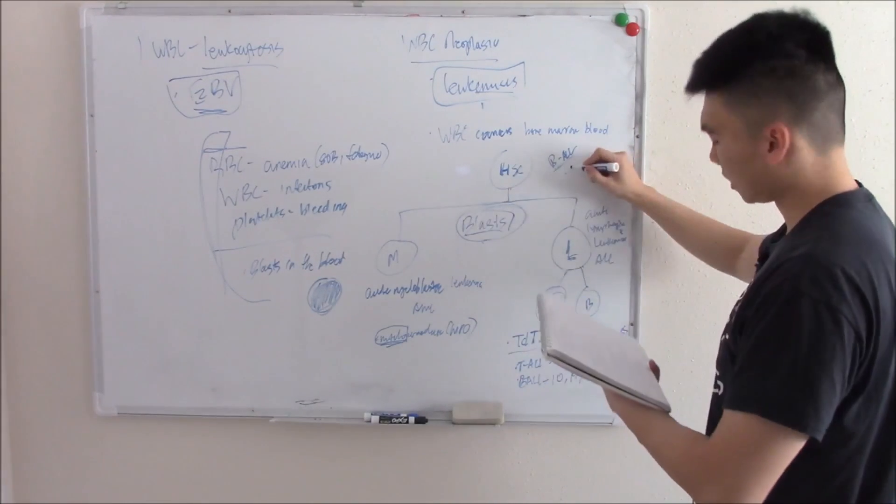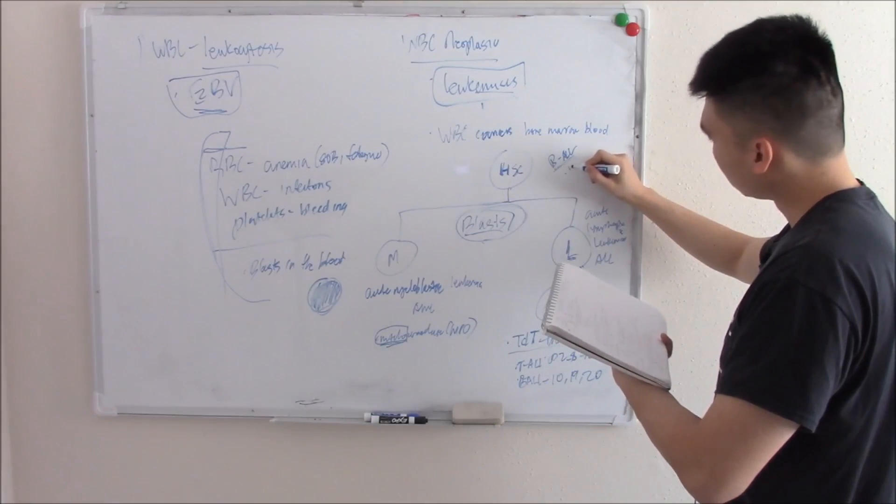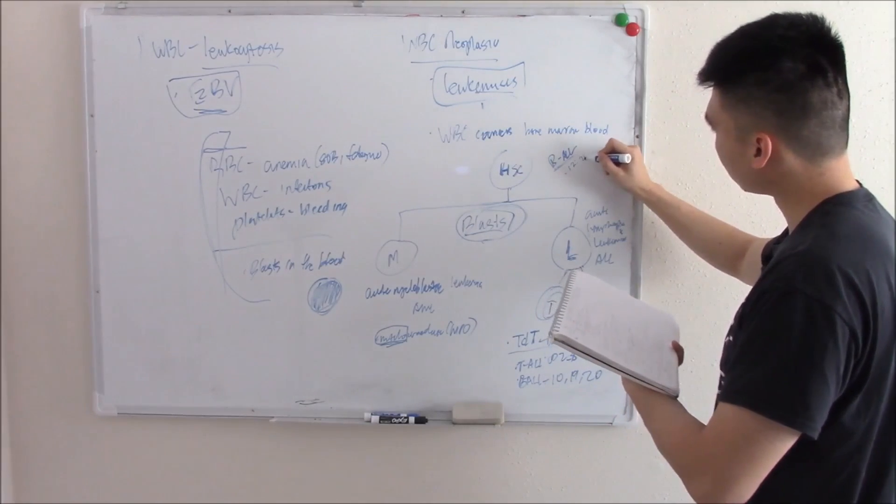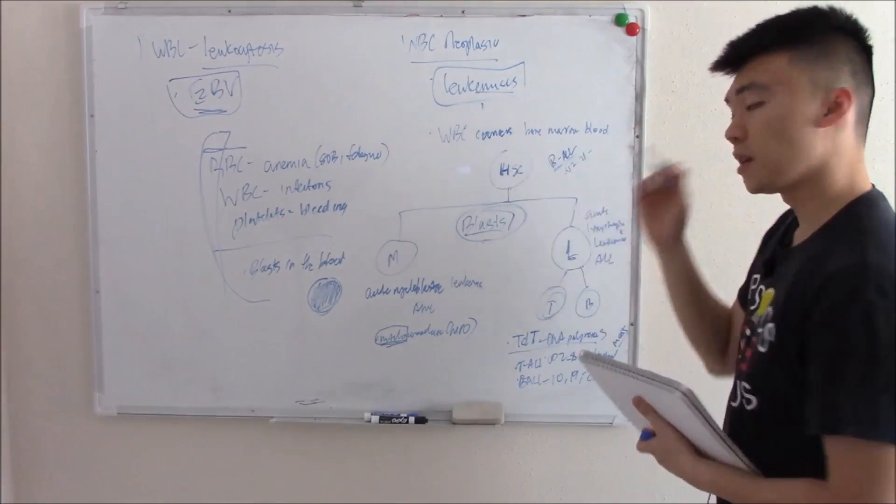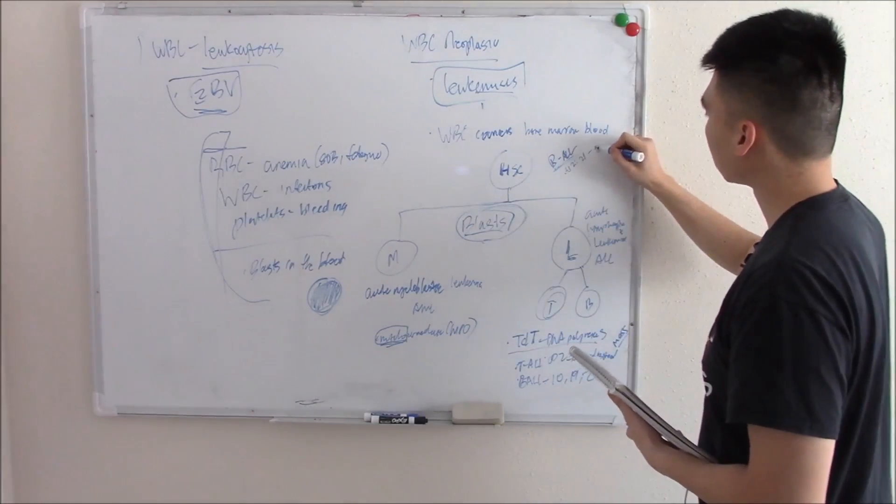chromosomes 12 and 21. There's a translocation of 12 and 21. If you see that, it's actually a good prognosis.